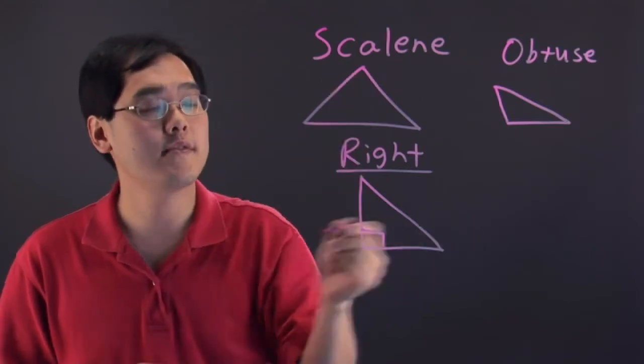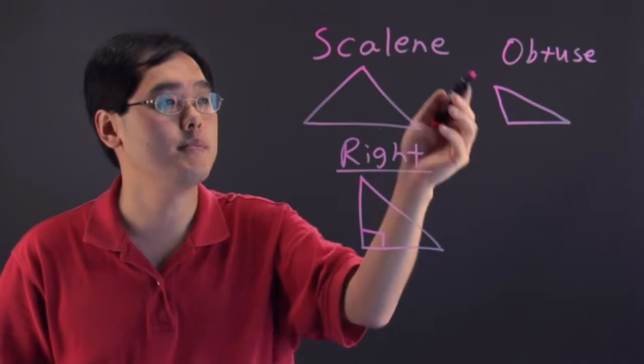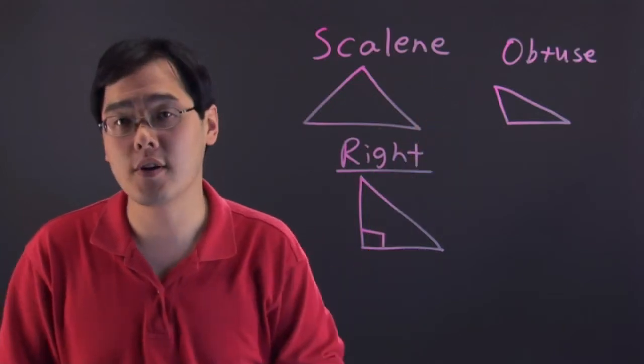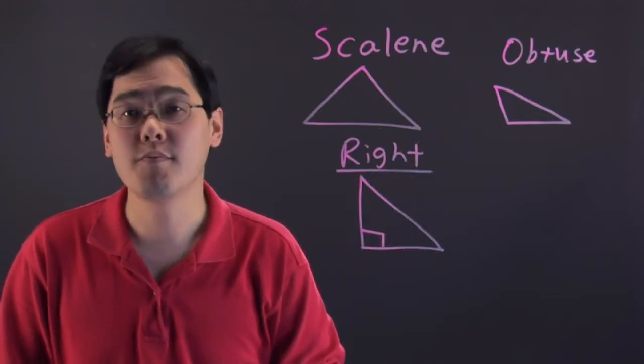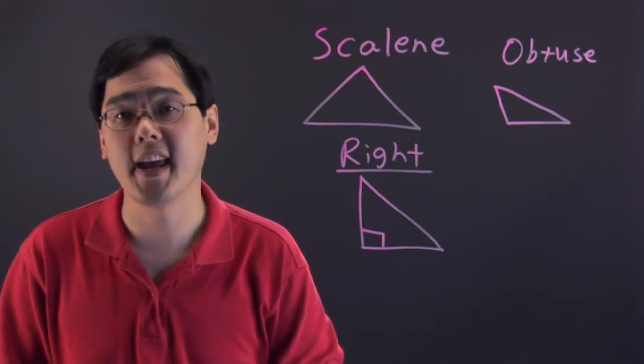But typically you've got three kinds of triangles here: scalene, right, and obtuse. And depending on whichever one fits your scenario you have one to choose from. So I'm Jimmy Chang and that's how you write a triangle.